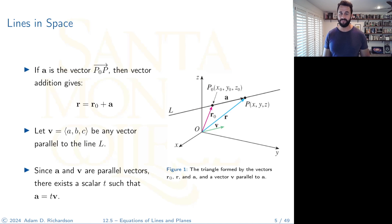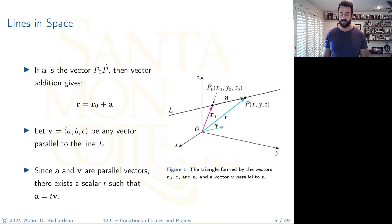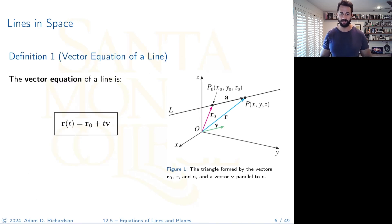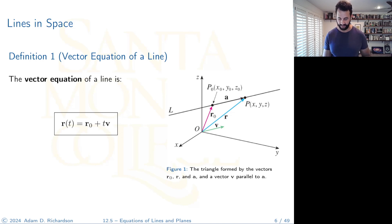Let v be any vector parallel to line L. Since a is parallel to v, they must be scalar multiples of each other, so there exists a scalar t such that a = tv. Substituting, we get the vector equation of a line: r = r₀ + tv. Start at r₀ and move t units along v.